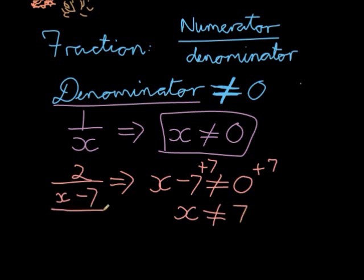And it makes sense, because if I look at that, if x is 7, I have 7 minus 7, which is 0. I may not have my denominator equal to 0.